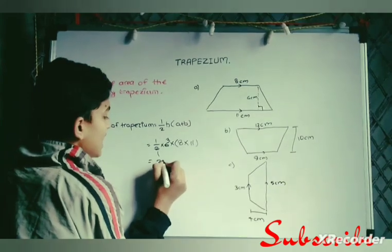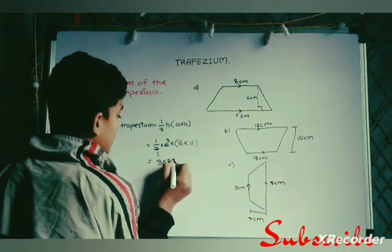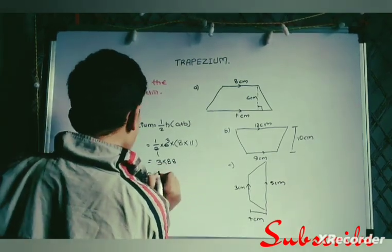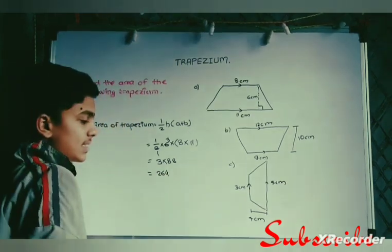And at the last, multiply 3 multiplied by 19. We will get the answer as 57 square cm.